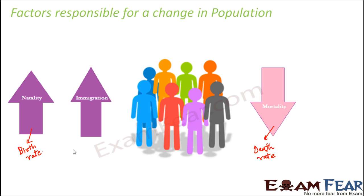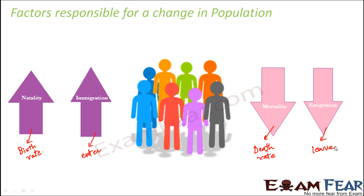Immigration is a group of individuals entering a particular area from outside. Whenever individuals enter a particular area, the population would increase. Similarly, there might be emigration — in emigration, individuals leave this area and go to some other place. So obviously when somebody is leaving the area, the population would reduce. These are the four important factors which decide how the population would change — whether the population would increase or decrease.